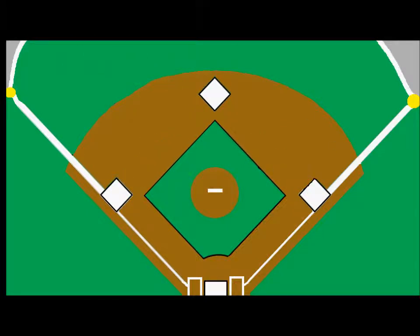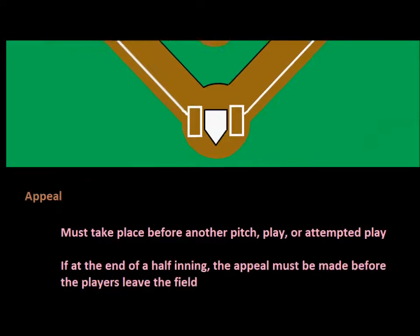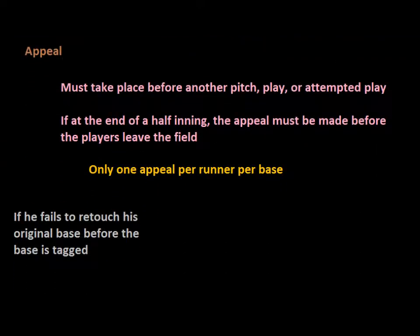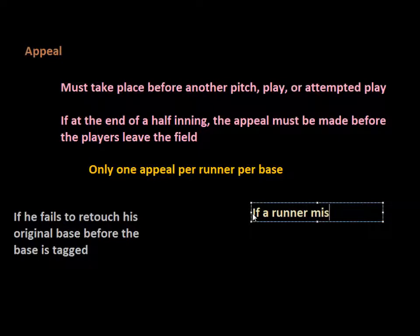However, the batter on the play would still get the double, assuming there were less than two outs. If there were two outs and that was the third out of the inning, then the inning would be over. But otherwise, the batter would still remain on second base. So this was basically the rule for when a runner misses a base.